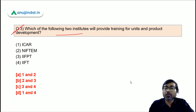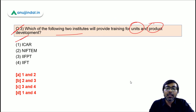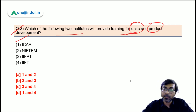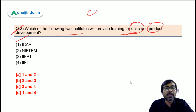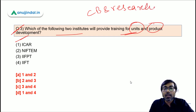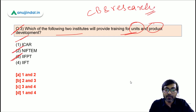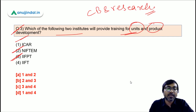Question 3: Which two institutes will provide training for units and product development under this scheme? Under the capacity building and research provision, NIFTEM and IIFPT are the two institutes that will provide training for units and product development. Option B — NIFTEM and IIFPT — is the correct answer.